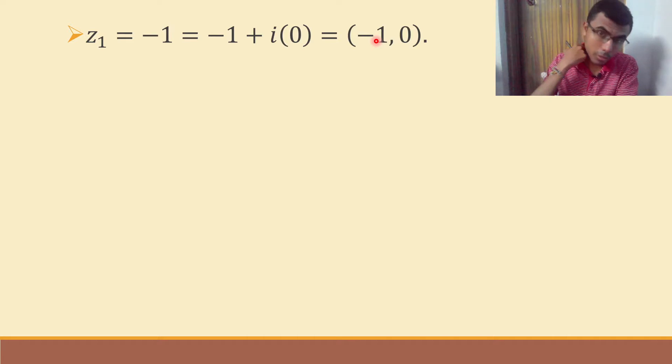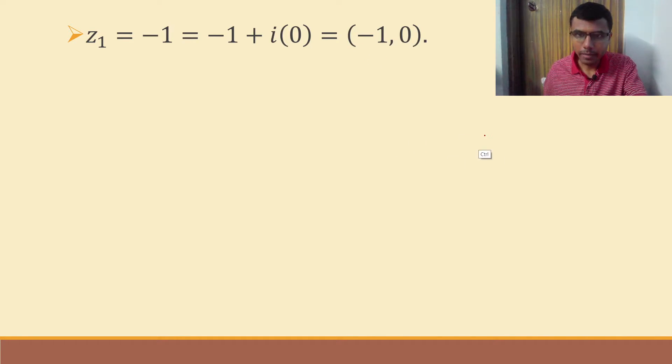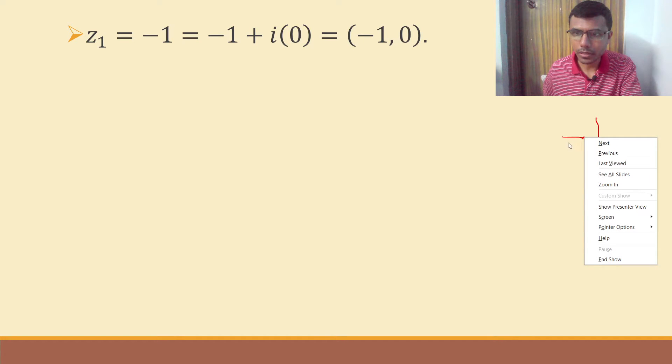Now what is the relation between me doing this and getting the argument? Let me just explain this a little. See, the point minus 1 comma 0 is here.